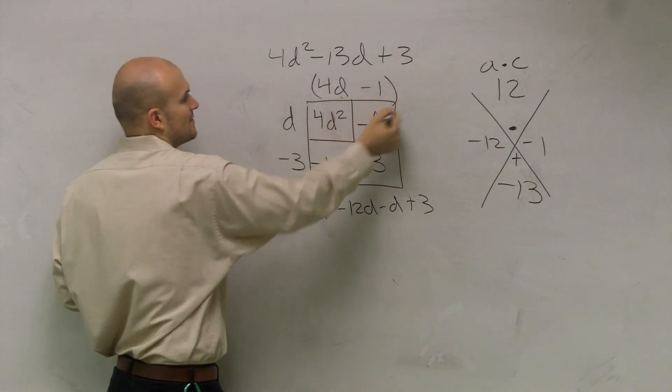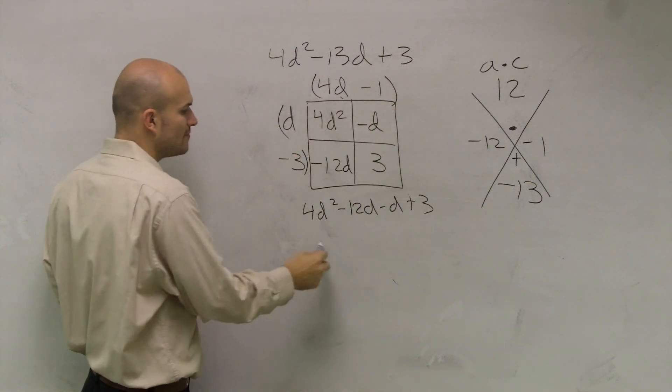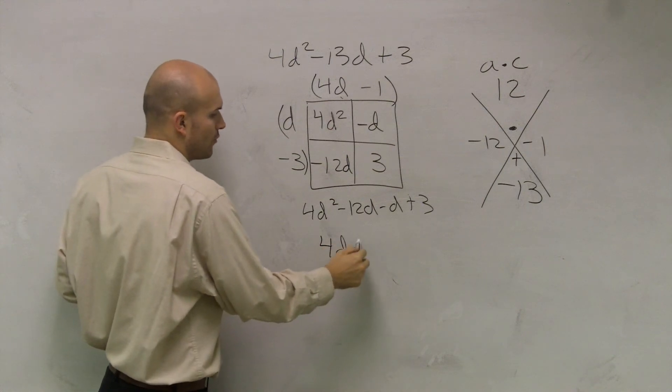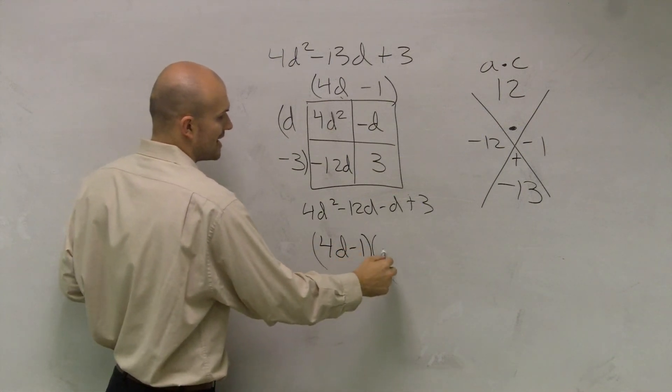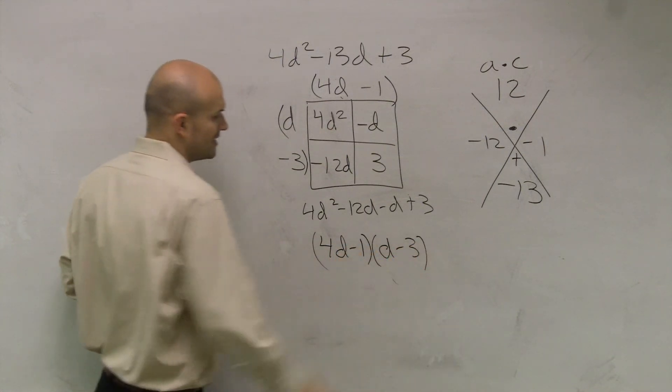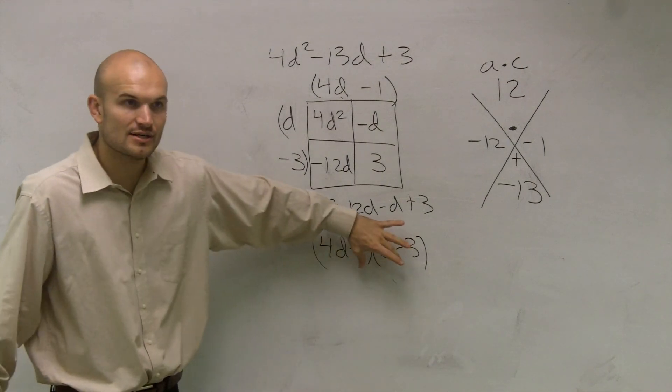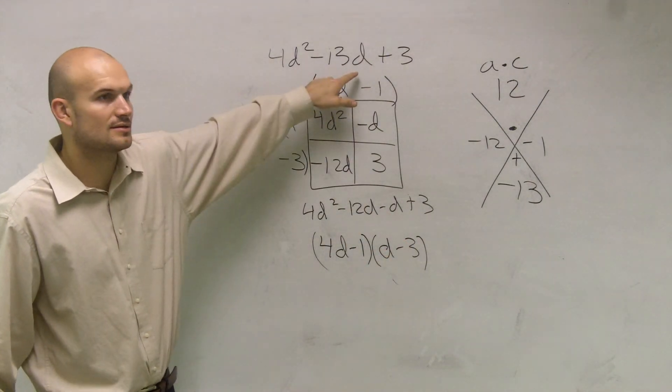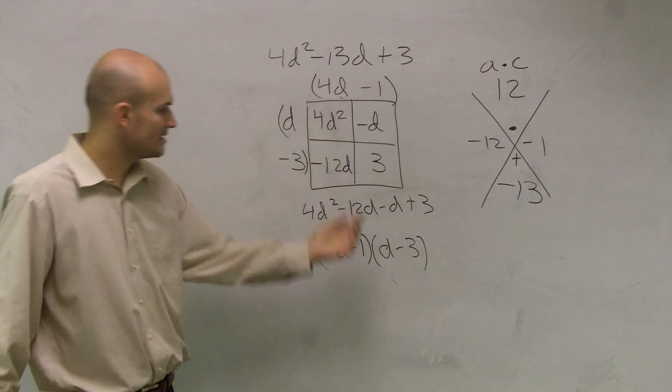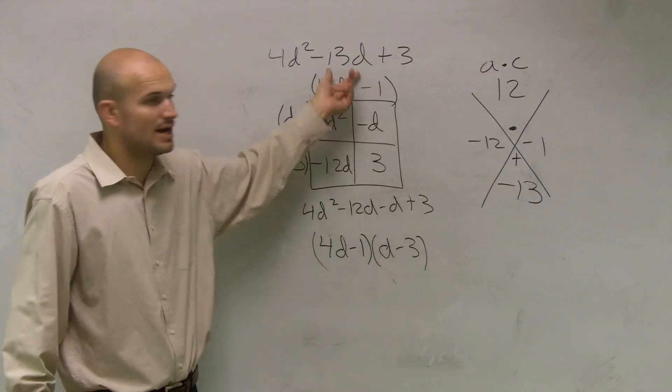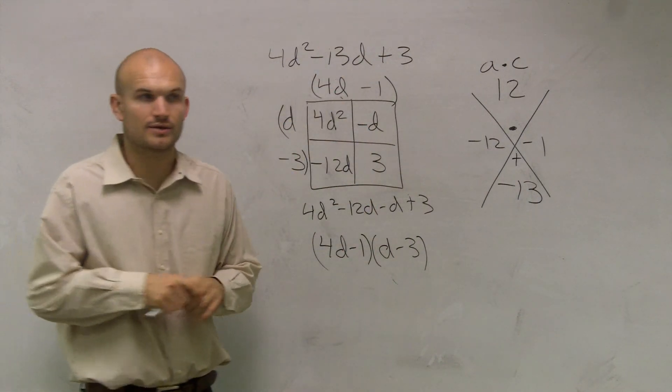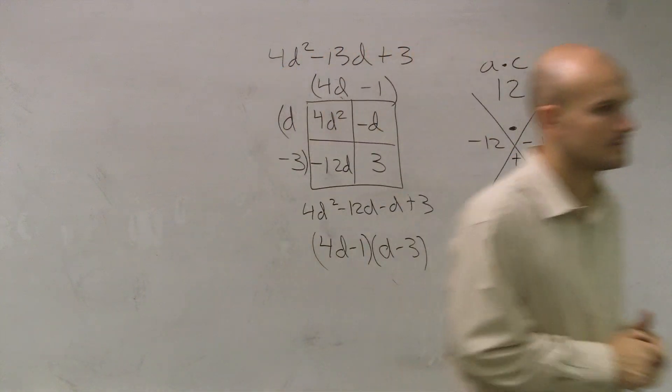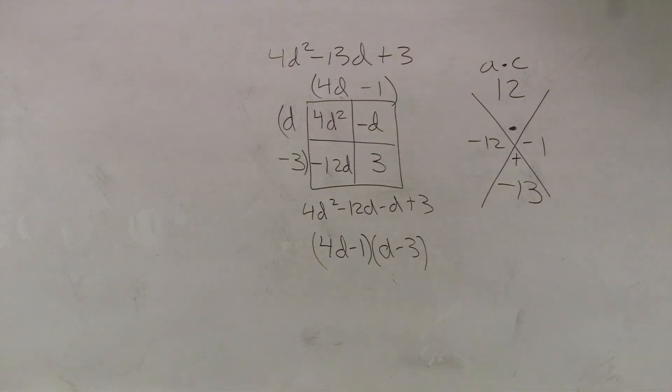Does a negative 1 times a negative 3 give me a positive 3? Yes. So guess what I understand now? Now I have my two binomials. So 4d minus 1 times d minus 3 is now my factored solution of this. I'm like, what's my answer? Okay, because these two, do these two multiply to give you that? Yeah, when you check them out with FOIL, they do. They work. Okay?